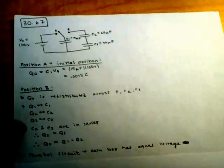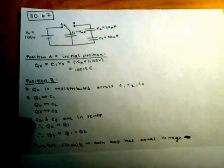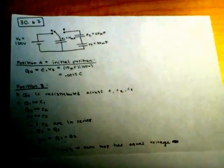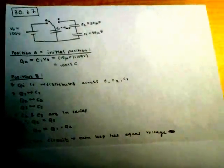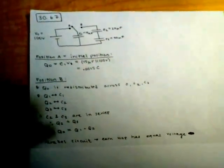We note that C2 and C3 are in series, meaning that the charge of capacitor 2 and charge of capacitor 3 are the same. And we note that this also means that the initial charge is equal to charge 1 plus charge 2. And because this is a parallel circuit, we note that each loop has equal voltage.